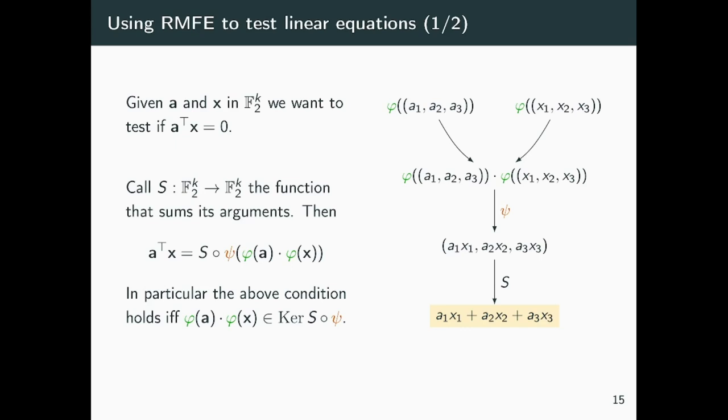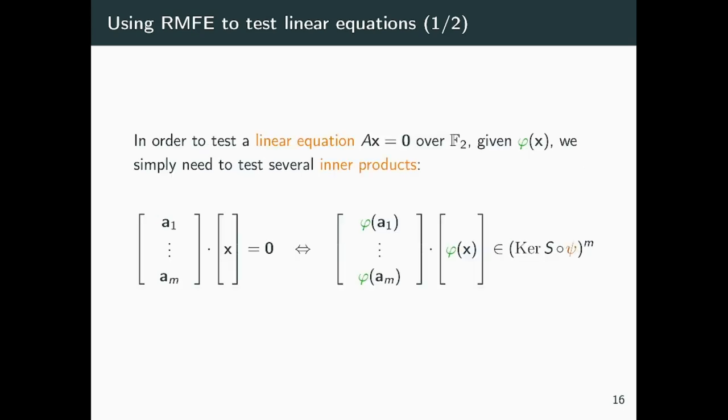Now, if we want to say that the two vectors are orthogonal, we just need to check that the composition S ∘ ψ applied to the product of the encodings returns 0, or said differently, that the product of the encodings lies in the kernel of S ∘ ψ. I would like to clarify that I use kernel in these settings because the maps S and ψ are both linear maps. So, the preimage of 0 is actually a linear subspace of the larger field.